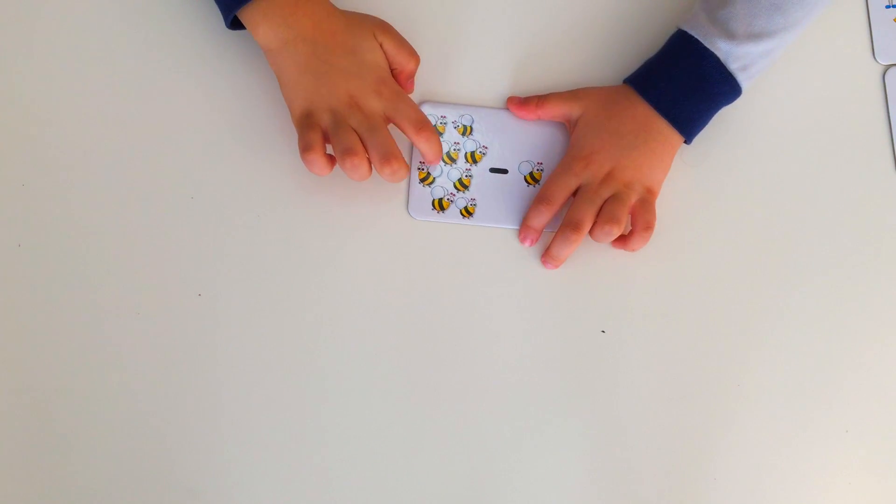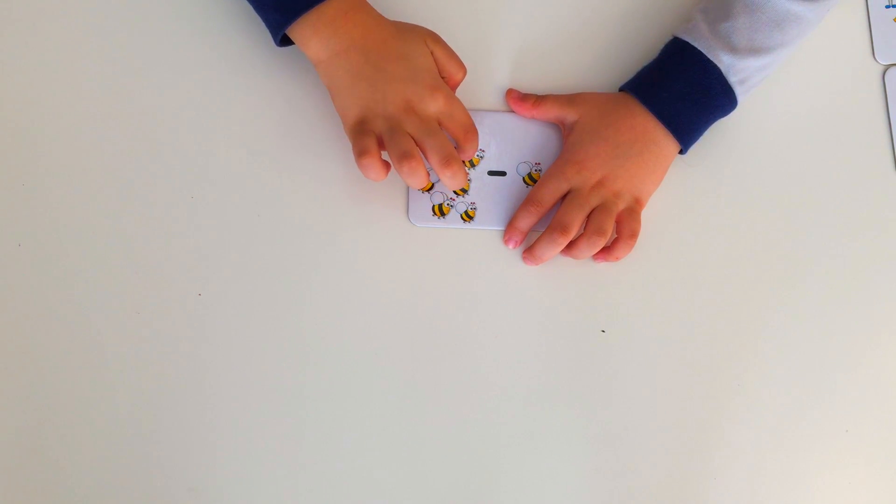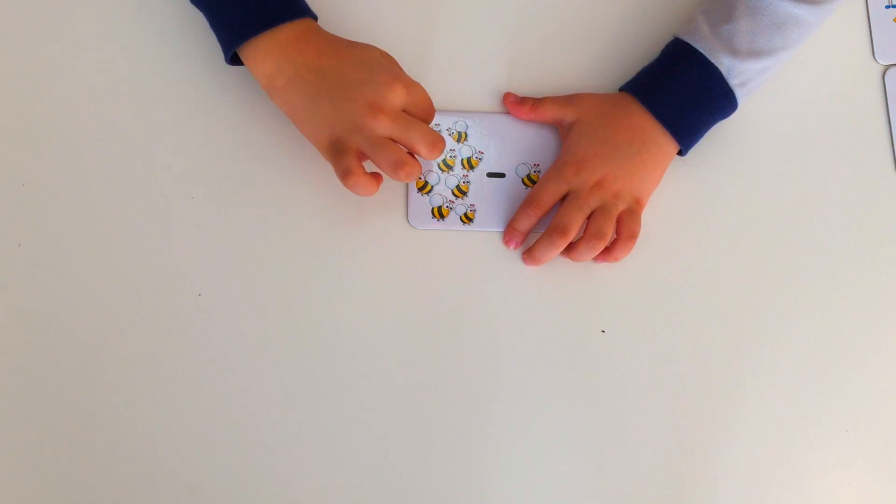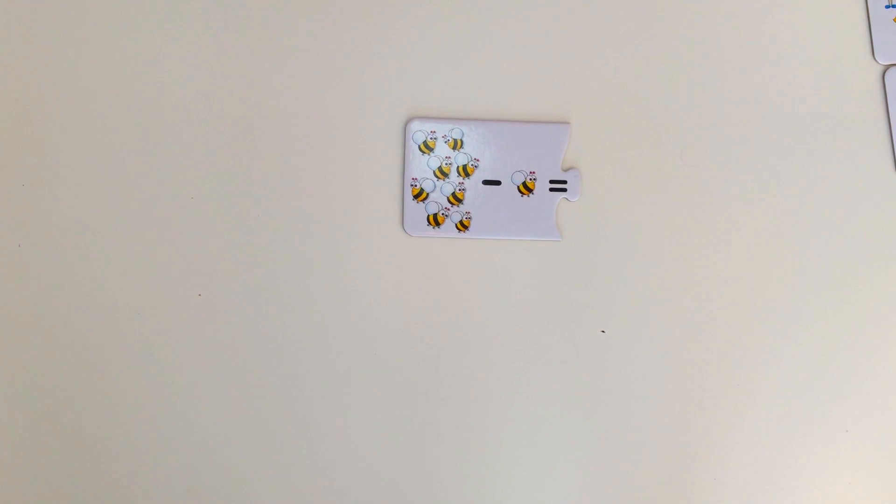One, two, three, four, five, six, seven... one, two, three, four, five, six, seven, eight honeybees. Eight minus one honeybee is seven honeybees.